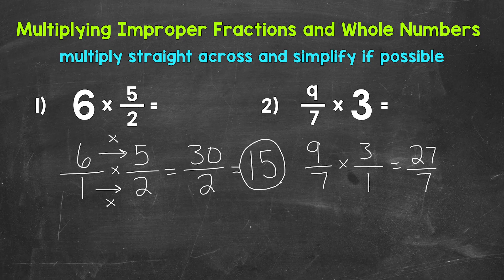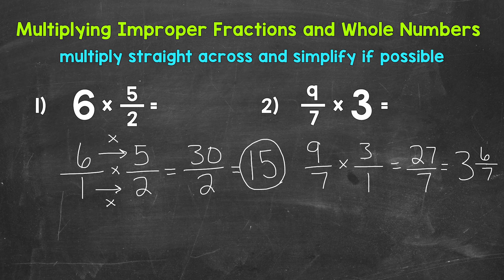Let's convert this to a mixed number. We divide the numerator by the denominator: 27 divided by 7. How many whole groups of 7 in 27? Well, 3 whole groups — that gets us to 21 — so we have a remainder of 6. That remainder is the numerator of our fractional part, and we keep the denominator of 7 the same. 6 sevenths is already in simplest form since the only common factor between 6 and 7 is 1. So the answer is 3 and 6 sevenths.